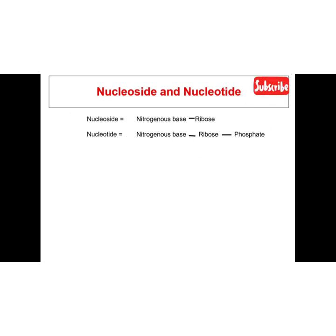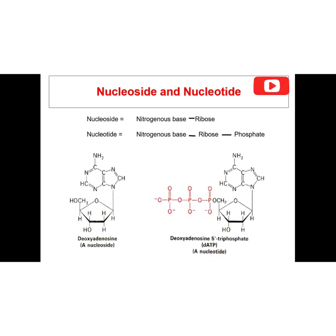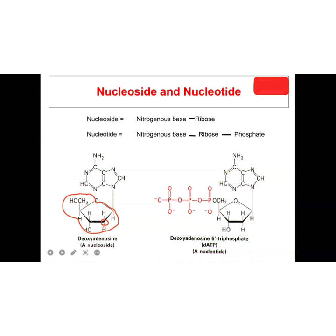The nucleoside contains the nitrogenous base and ribose sugar, while the nucleotide contains the nitrogenous base, ribose sugar, and a phosphate group — that is the major difference. This is a deoxyribose sugar because at carbon 2', if there is an oxygen (OH group) it is called ribose, but if there is no OH at that point it is called deoxyribose, meaning there is no oxygen at that position. This particular molecule is deoxyadenosine — a nucleoside because it contains only the sugar and the nitrogenous base, adenine.